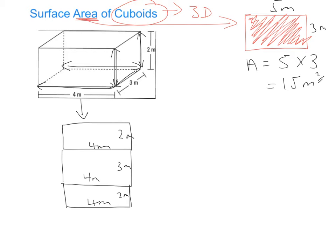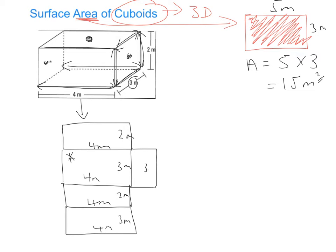And then the other rectangle we need to look at is the one at the very top — we've already looked at the bottom, but we also need to account for the top to close the cuboid. So again, that's 4 metres across and 3 metres deep, the same as the bottom. Finally, we've got the two rectangles on either side of the shape, and those are going to be 3 metres by 2 metres.